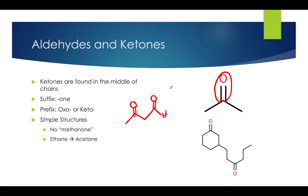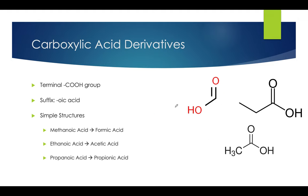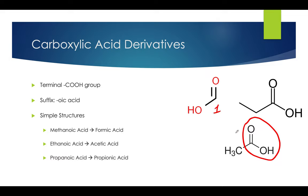Now the last set of molecules I want to cover are called carboxylic acid derivatives. These molecules are indicated by the presence of a carboxyl group, or COOH. These are always terminal, so once again you won't be numbering them during the naming process. Their suffix is '-oic acid,' and their three simple structures are formic acid, acetic acid, and propanoic acid.